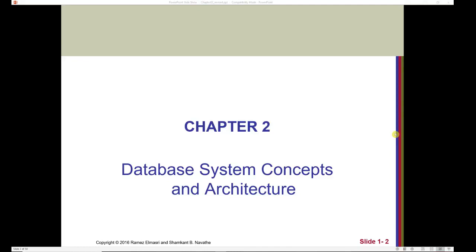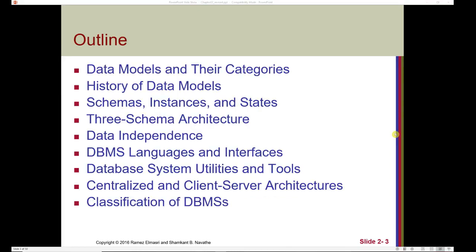Chapter 2: Database System Concepts and Architecture. In this chapter, we'll look at data models and their categories, a history of data models, schemas, instances, and states, the three-schema architecture, data independence, DBMS languages and interfaces, database system utilities and tools, centralized and client-server architectures, and a classification of database management systems.